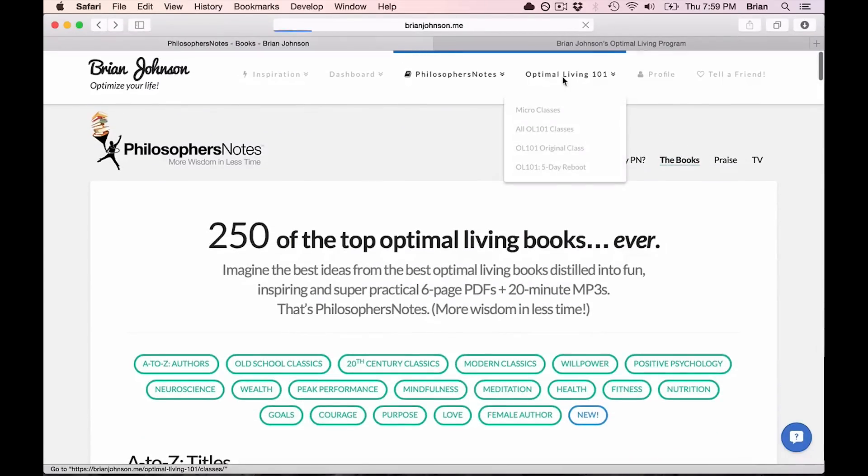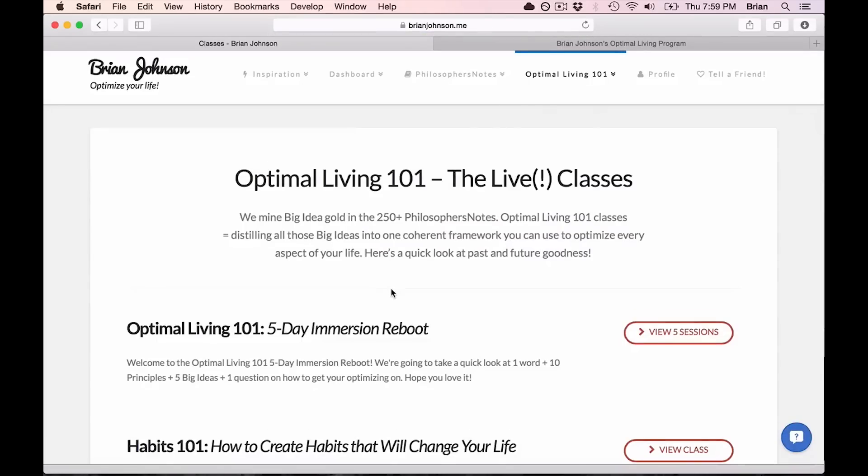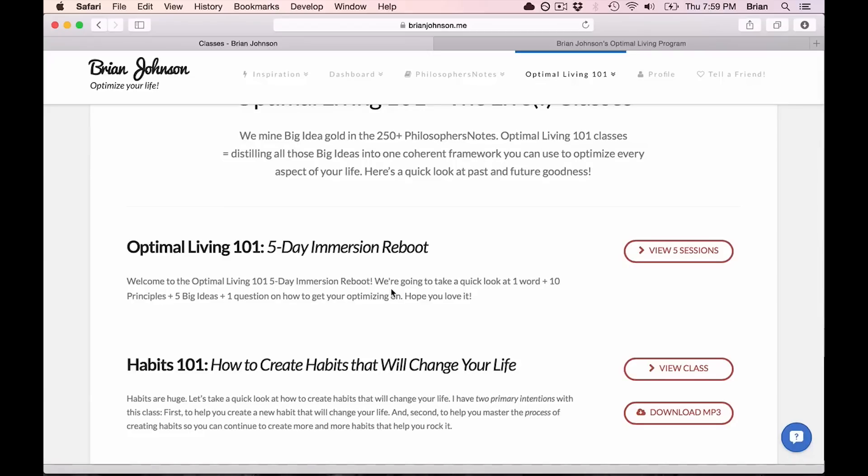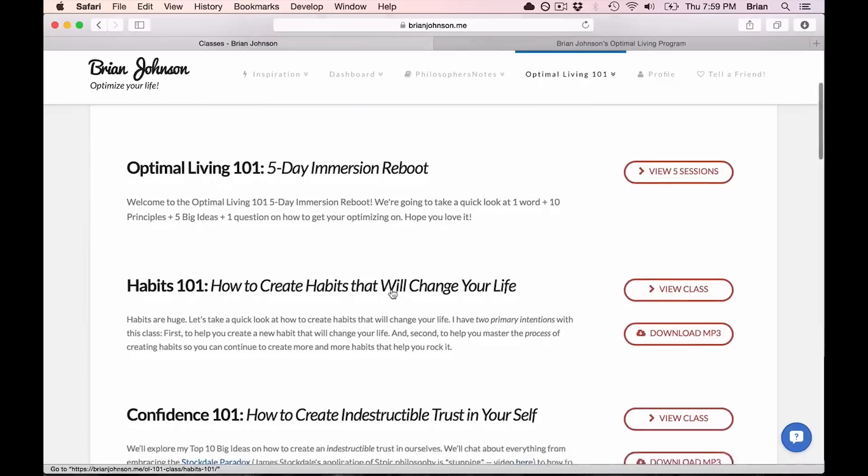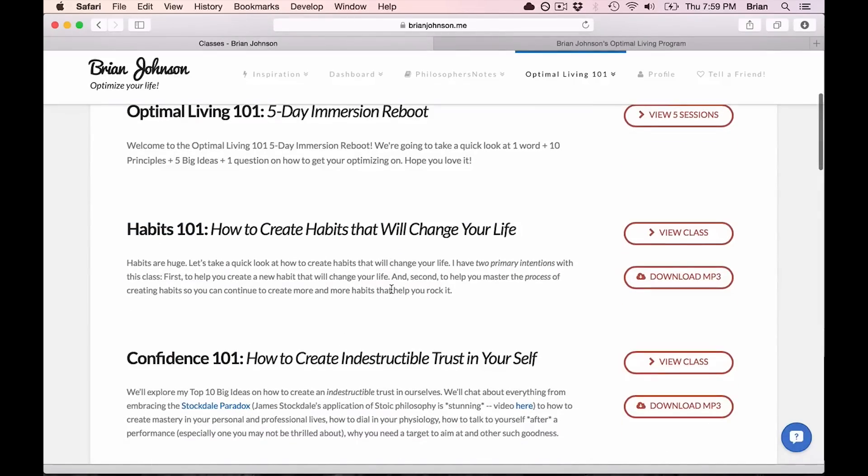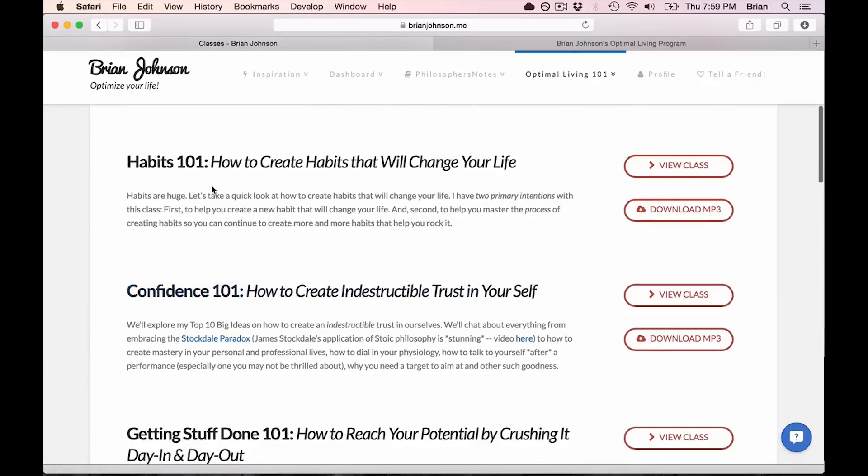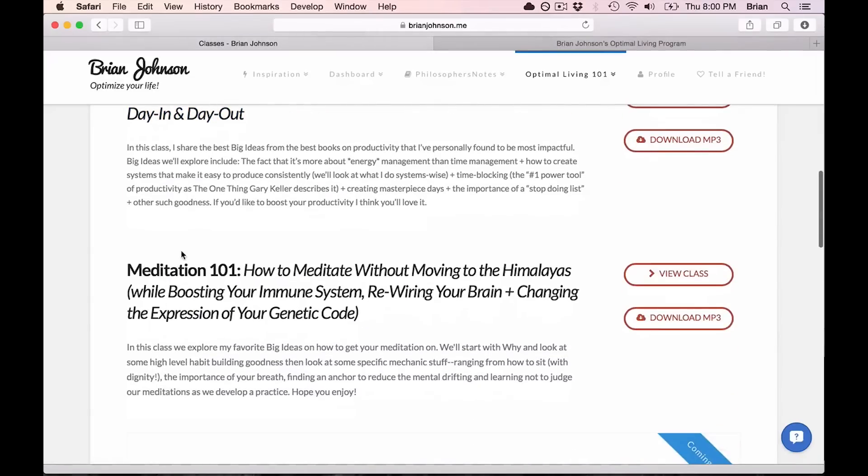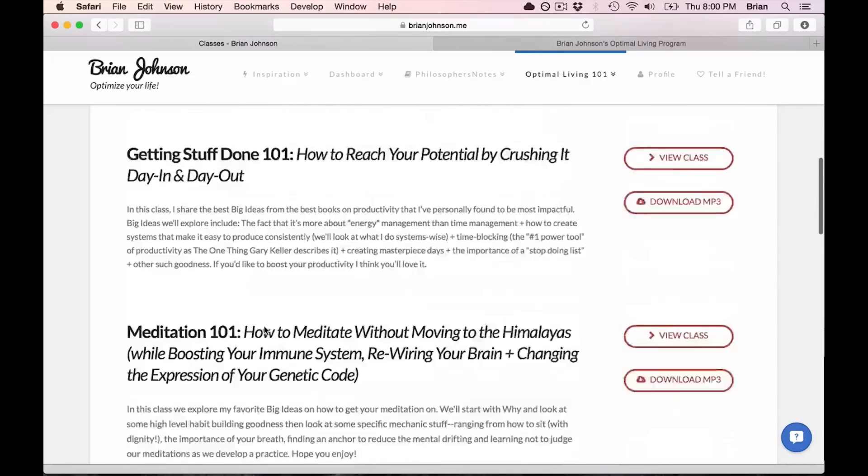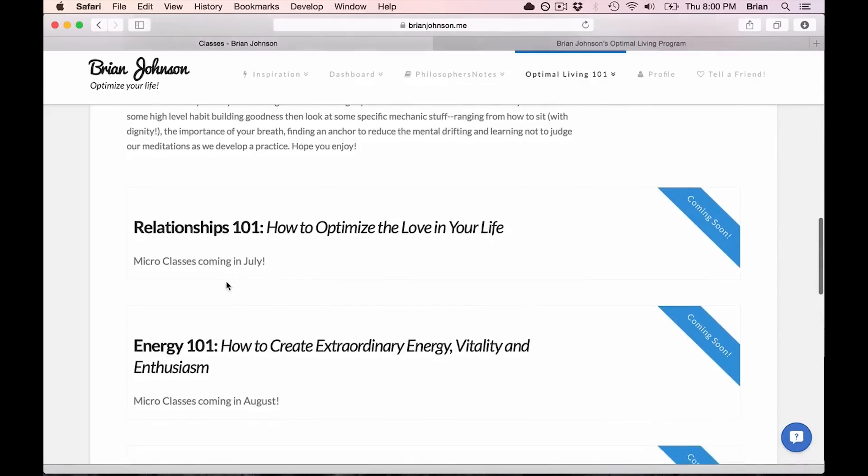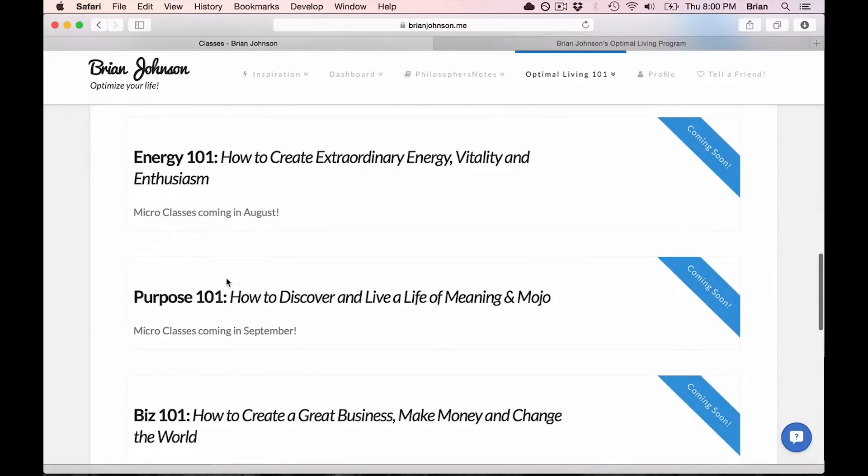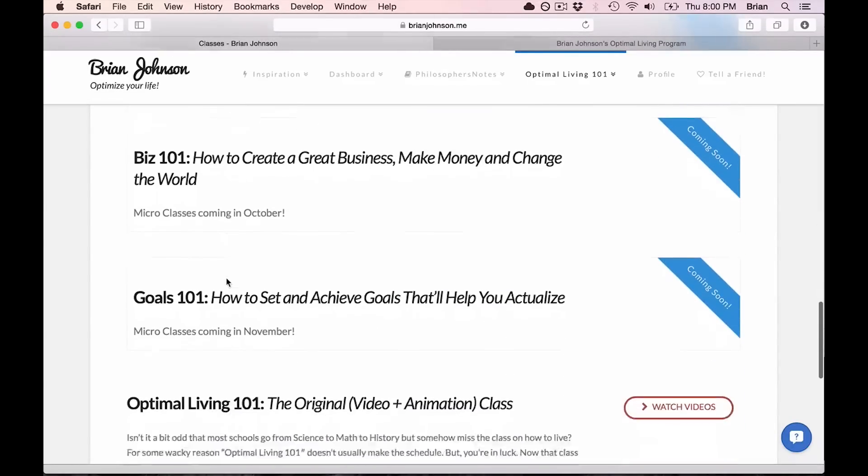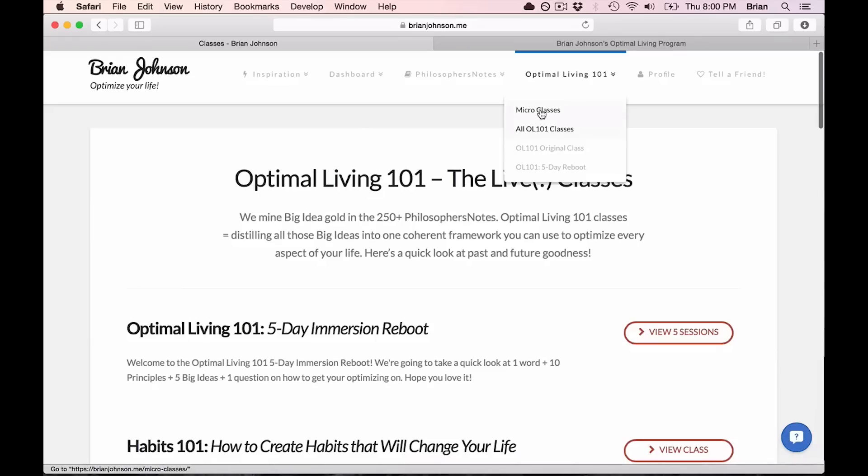And then in addition to philosopher's notes, you get access to Optimal Living classes, Optimal Living 101. Idea here is that all those great teachers come back to the same big ideas again and again. I distill those ideas into classes. Super practical, fun, inspiring classes ranging from Habits 101, Confidence 101, Getting Stuff Done 101, Meditation 101, Instant Access to all those classes. And then future classes include Relationships 101, Energy 101, Purpose 101, Business, Goals. Those are full-length classes.